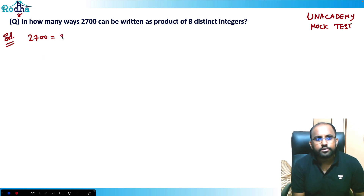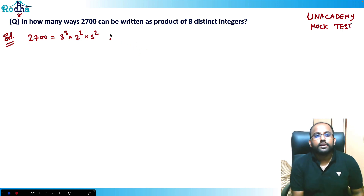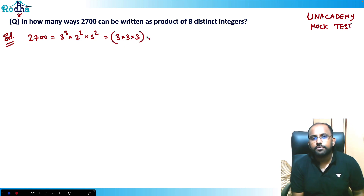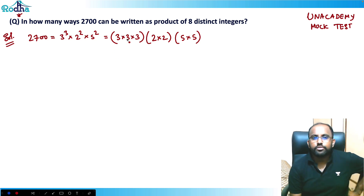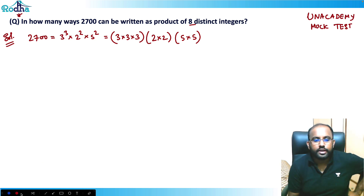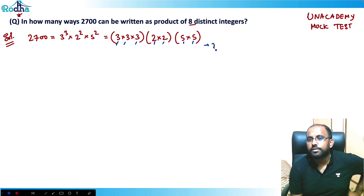2700 equals 3³ × 2² × 5², which means: 3 × 3 × 3 × 2 × 2 × 5 × 5. If I count these, that's 1, 2, 3, 4, 5, 6, 7 — I have seven numbers here.